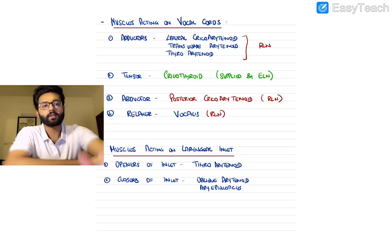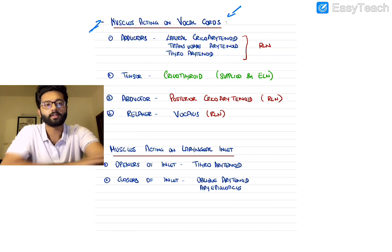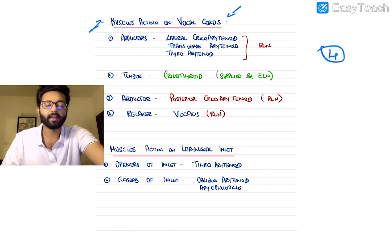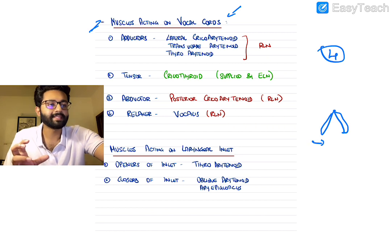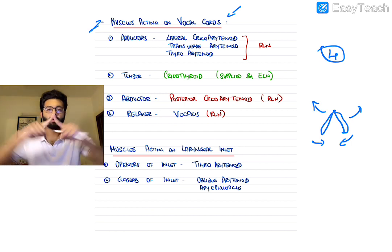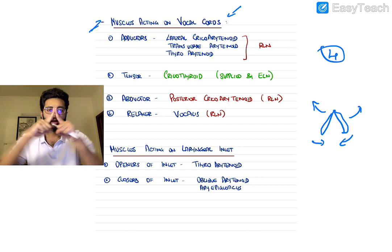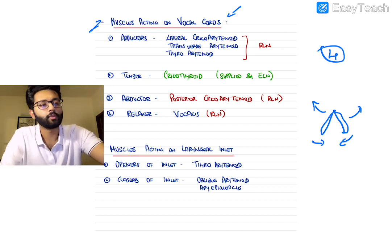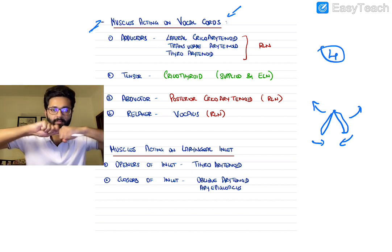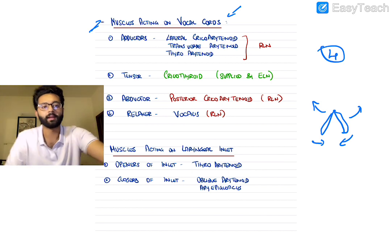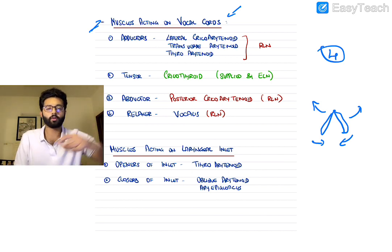Coming to the important part: the muscles acting on the vocal cords. These can be classified into four types. Adductors bring the vocal cords together. Abductors split the vocal cords apart. Tensors stretch the vocal cord and make it tense, making the voice more shrill. And relaxers relax the vocal cords.